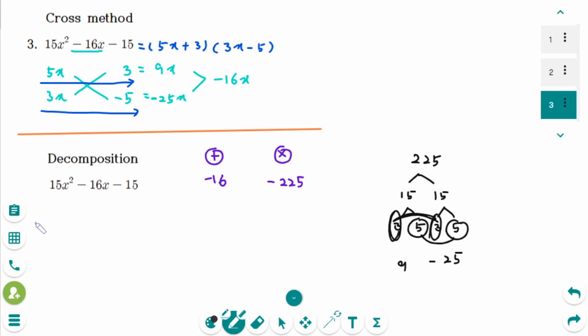Now, the trinomial can be rewritten as 15x squared. Here, plus 9x minus 25x is always middle term breaks into two terms together. And minus 15.